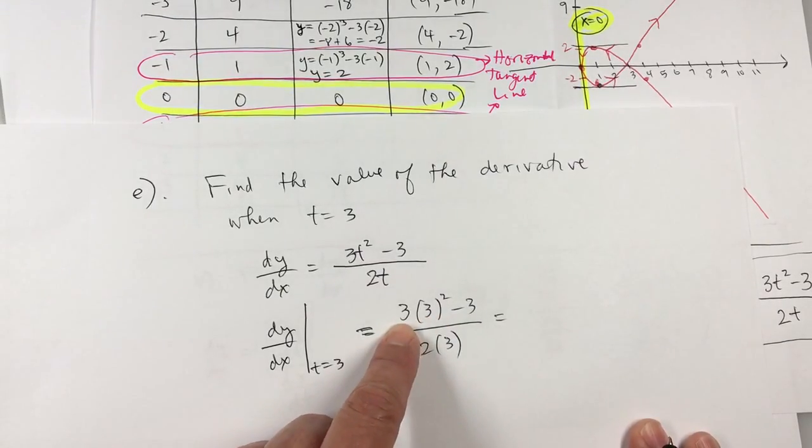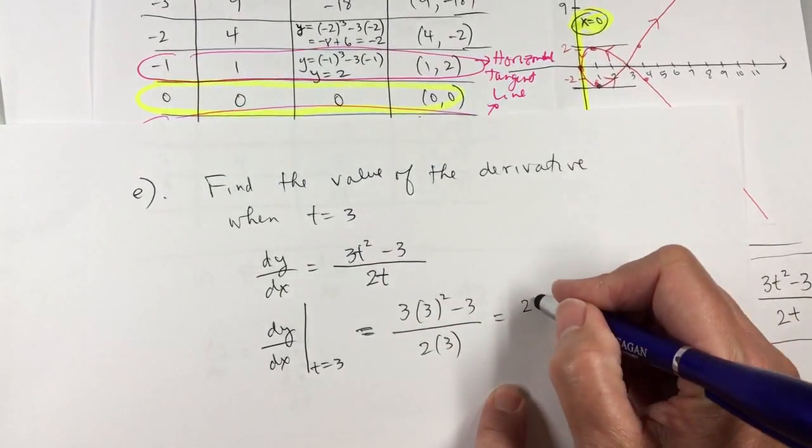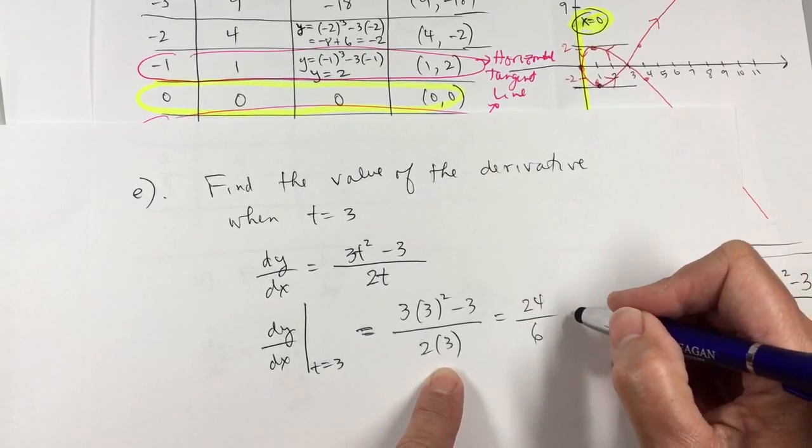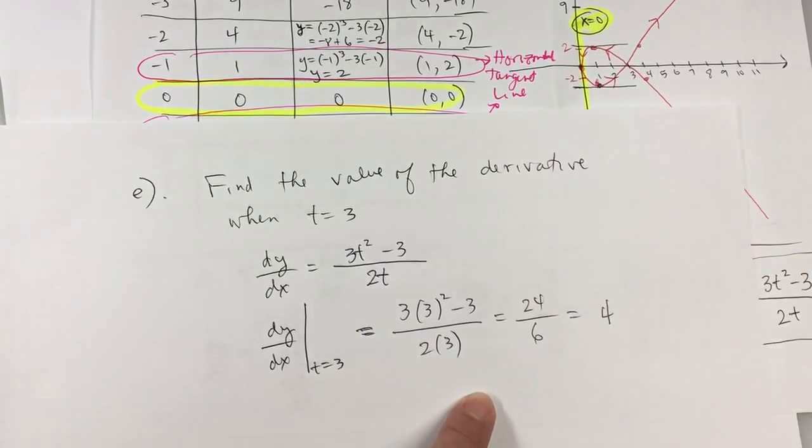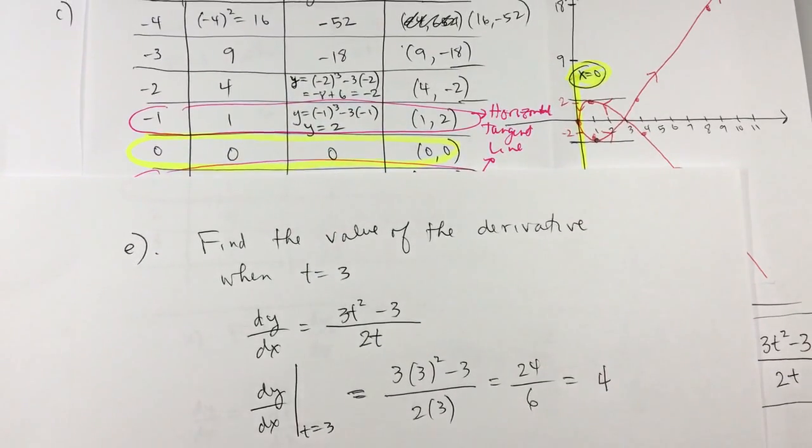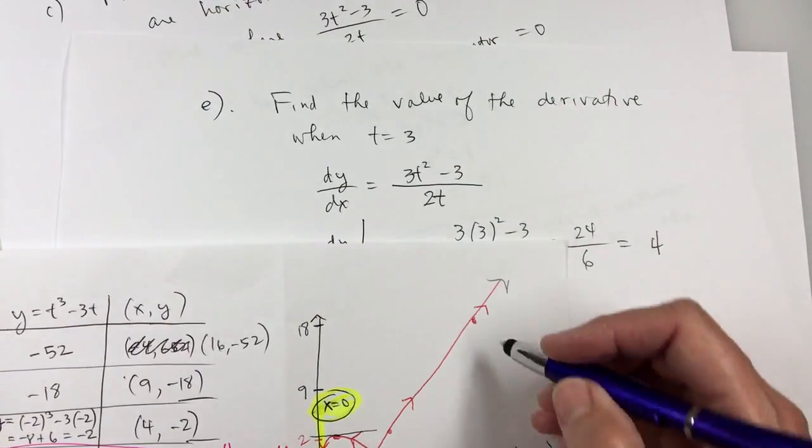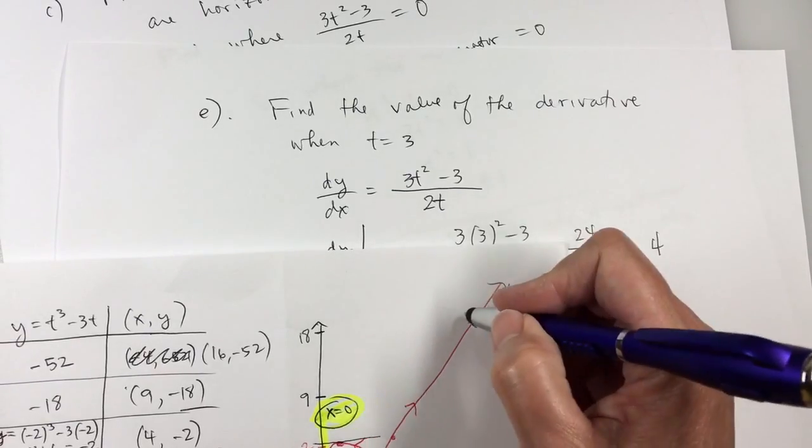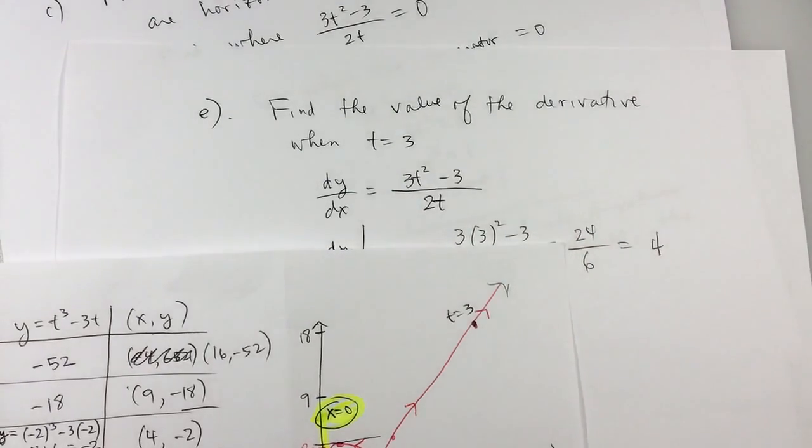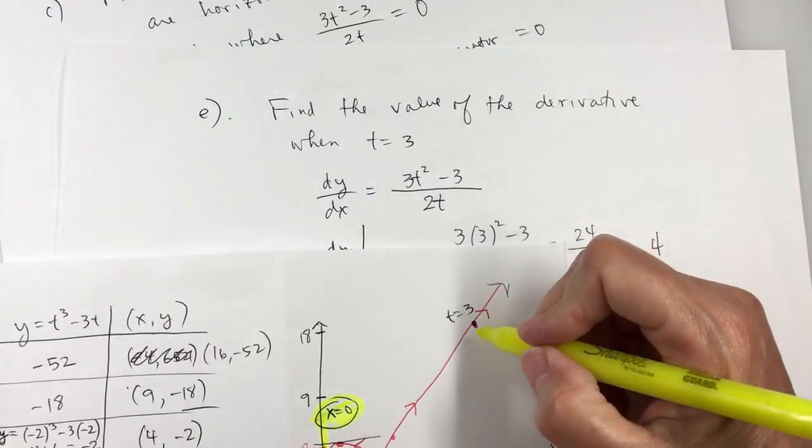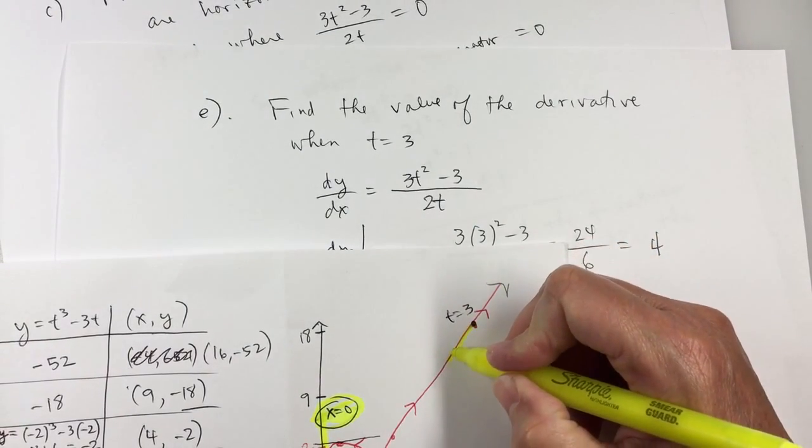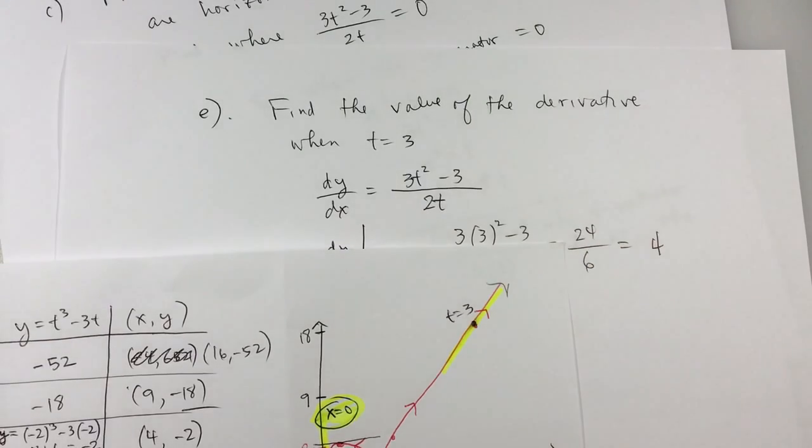That would be 3 times 3 squared minus 3 over 2 times 3. See, that's 9 times 3 is 27. 27 minus 3 is 24. 24 over 6, and that reduces to 4. What is the interpretation of that? That is the slope of the tangent line at t equals 3. And that point was right here. This point t equals 3. And I'm going to sketch this one in the yellow. This tangent line is so going to looks like it's going to be coincide exactly with the graph. But it only touches at that one point.